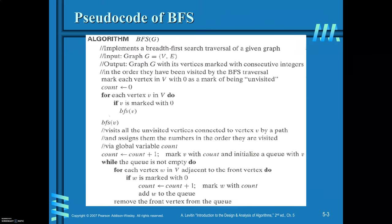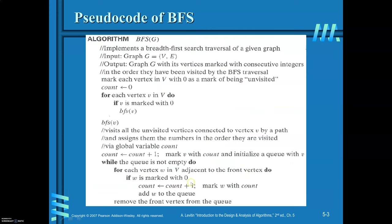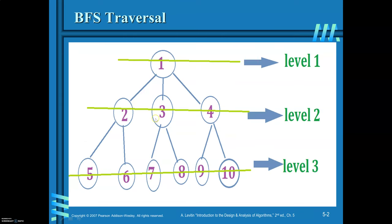For each vertex W adjacent to the front vertex — which front vertex is it? Currently it is 1 itself. So for vertex 1, which are all the adjacent vertices? Vertices 2, 3, and 4. So insert those into the queue and mark these vertices with values 2, 3, and 4 respectively. Then, since all the adjacent elements of 1 are already explored, remove vertex 1 from the queue. Now in the front, 2 is there.